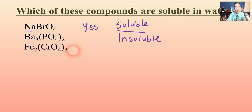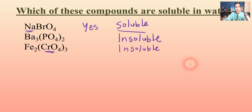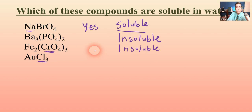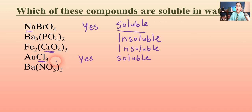Let's try iron(III) chromate. Chromates don't dissolve in water unless there's an alkali metal or ammonium present, and we don't have that here, so that's insoluble. How about gold(III) chloride? All chlorides are soluble except for silver, lead, and mercury, and gold is not one of those — so yes, that is soluble. What about barium nitrate? Every nitrate is always going to be soluble in water, so that is definitely yes.